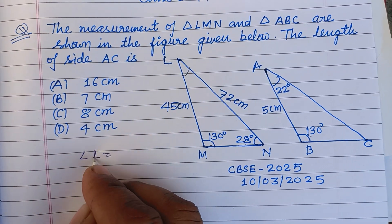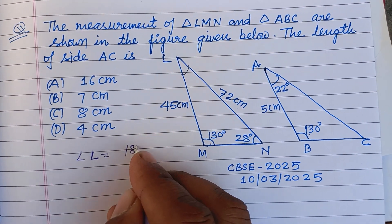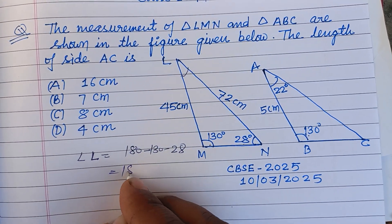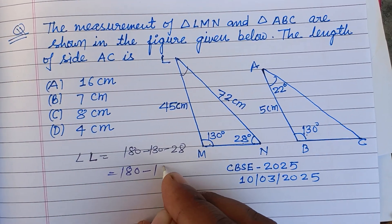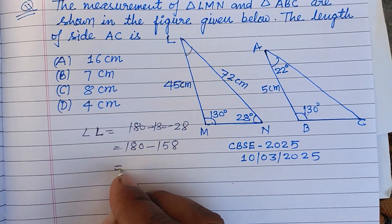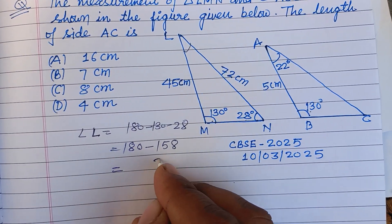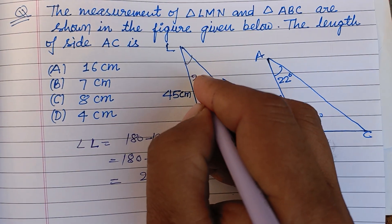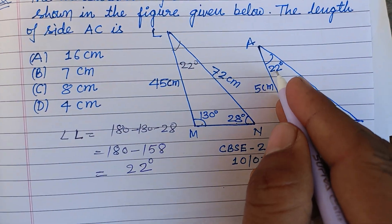Angle L equals 180 minus 130 minus 28. So this is 180 minus 158, which gives us 22 degrees. So angle L is 22 degrees, and here it is 22 degrees, then this is 28 degrees.